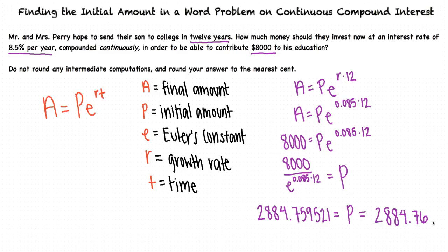This means that Mr. and Mrs. Perry should invest $2,884.76 now, so that 12 years from now, they will have $8,000 for their son's education.